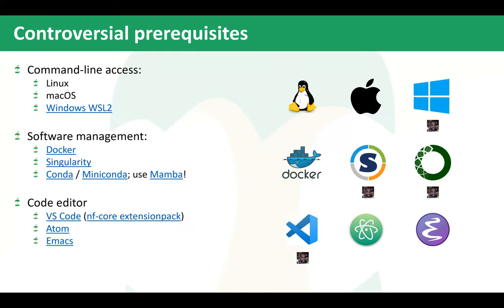Ideally you would have either Docker or Singularity installed locally, in your HPC environment, or wherever you're running these commands. You also need a code editor to help you edit code and make things more seamless in terms of saving. Some of these editors have Git integration, which is really cool. We've developed an extension pack specifically for NFCore with a bunch of extensions for VS Code, where you can get a bundle of extensions relevant to the way that we work on NFCore. My personal setup is Windows, Singularity, Conda, and VS Code.